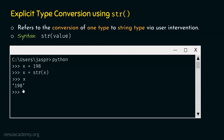To verify this, type type(x) and hit enter. We get the message 'class str', which indicates that this object belongs to the str class — confirming it is now a string. This is how the str function works and we are done with this topic.